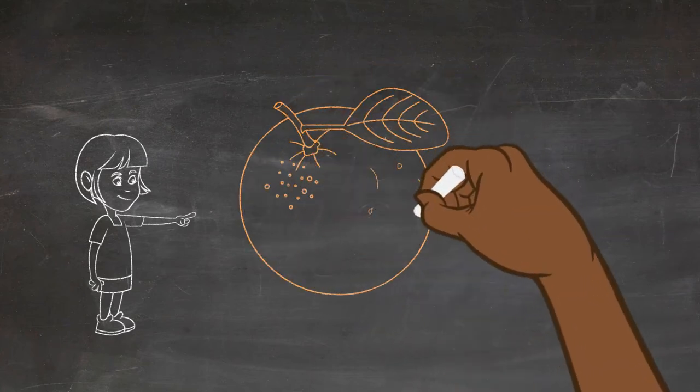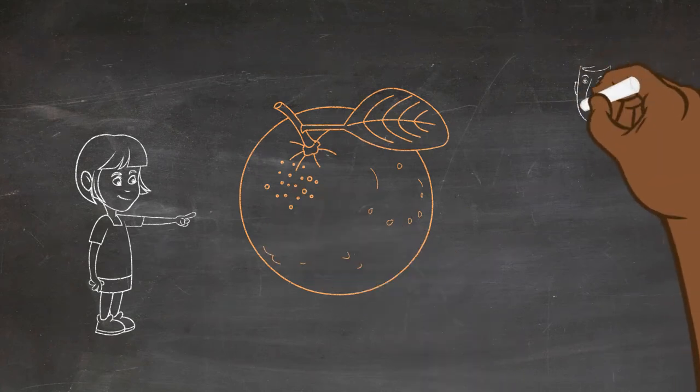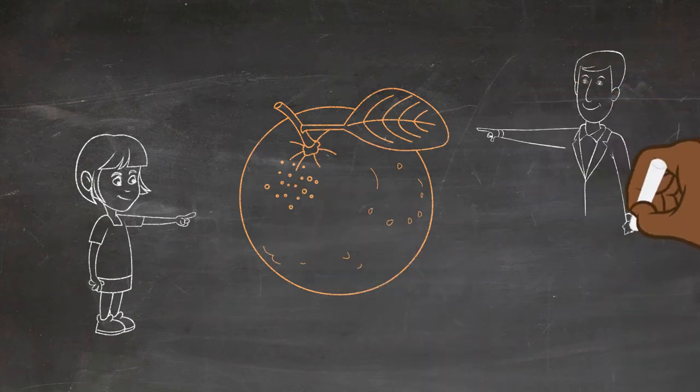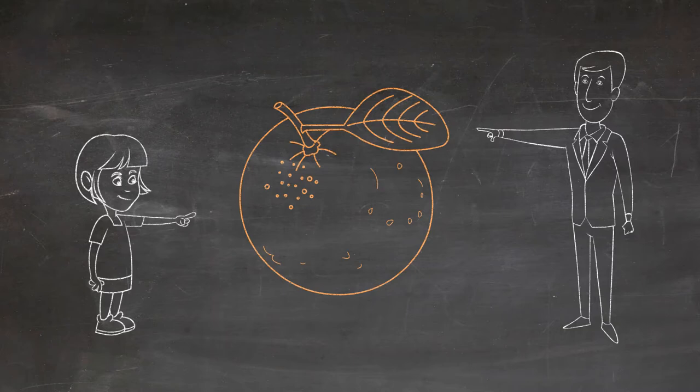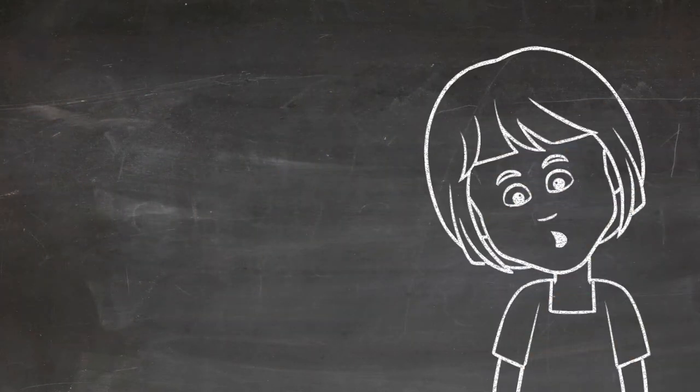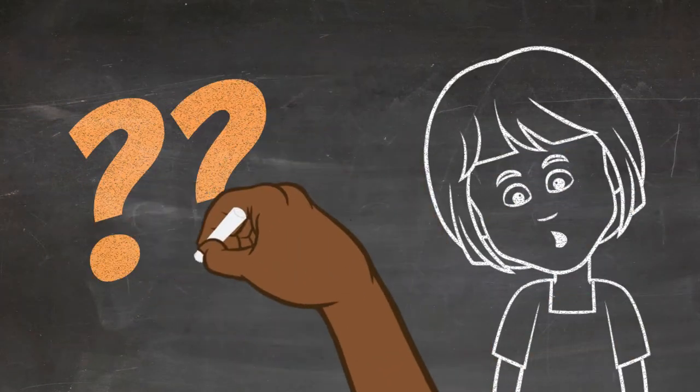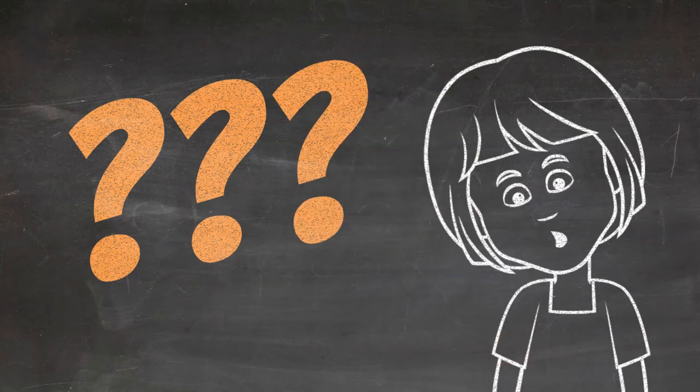You quickly run over to the tray and reach out your hand to grab it, but just as you do that, someone else does the same thing. Now you're in a bit of a pickle. It's clear that both of you really want this orange. So you begin negotiating.